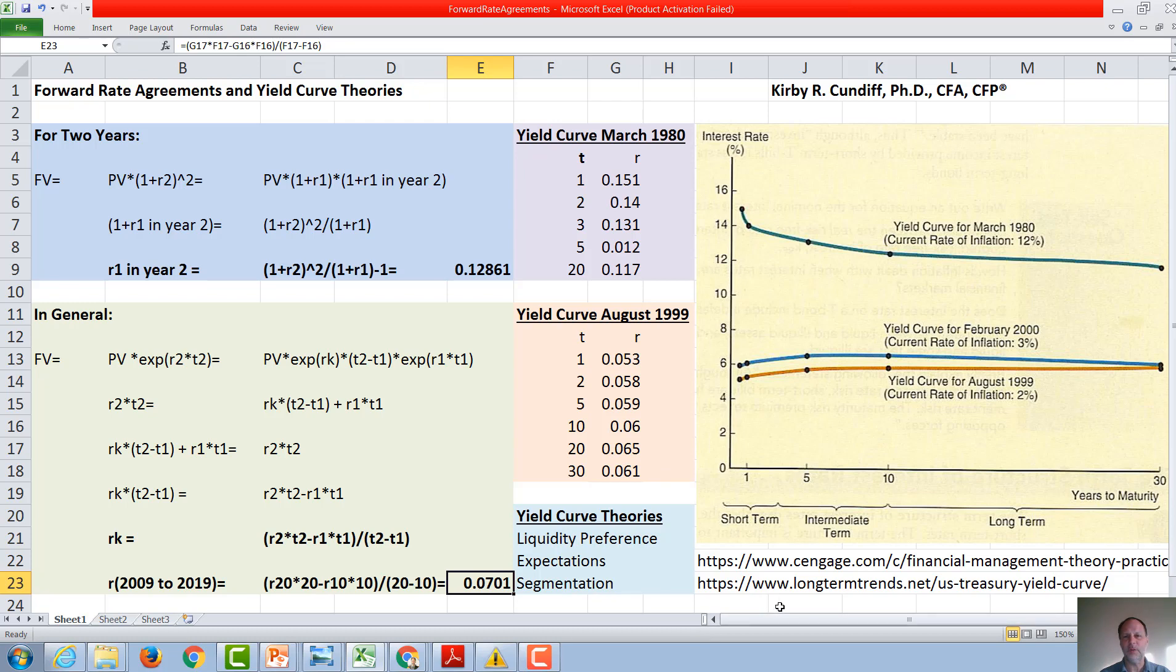For the information in this video, I use this nice graph from one of the Brigham and Houston Financial Management texts, which are available from Cengage, and to get these actual data points, I went to the U.S. yield curve data under long-term trends. I thank you for watching this video.